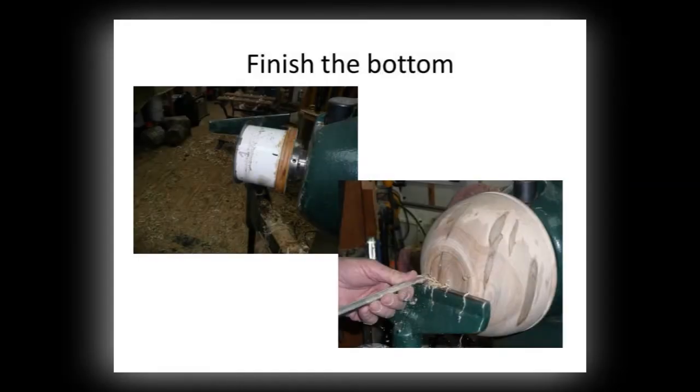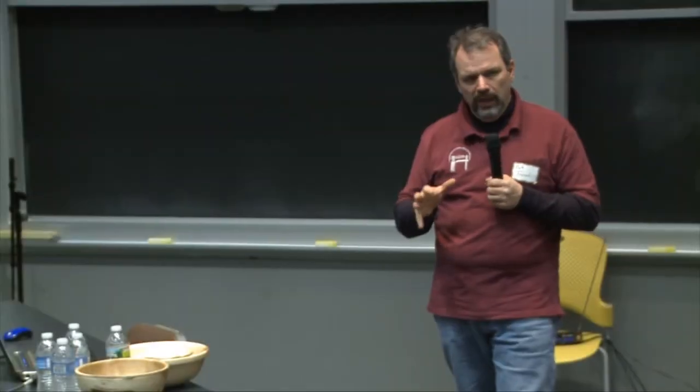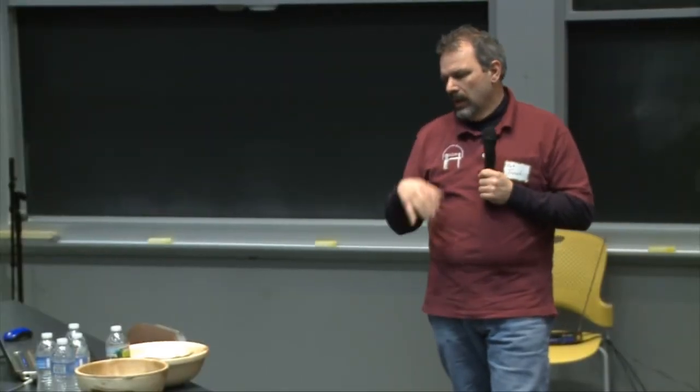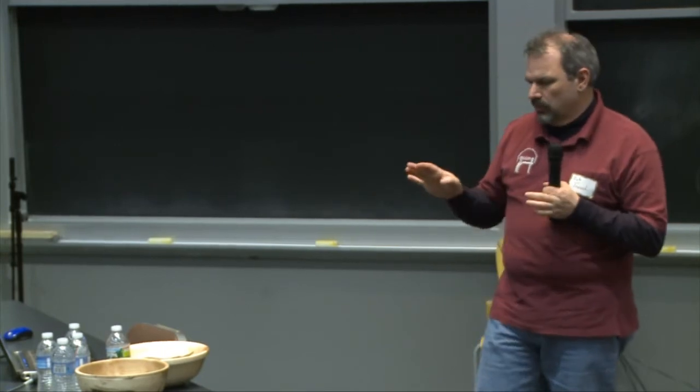Now we're going to finish the bottom of the bowl. What you see there in the white is actually a vacuum chuck. So the bowl is held onto the lathe strictly by vacuum, and you can finish the bottom up so you don't have any screw holes.